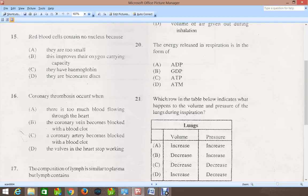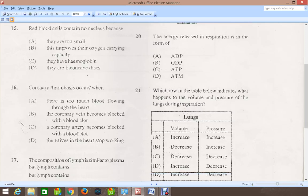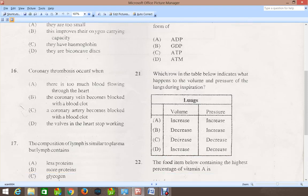Question 16: Coronary thrombosis occurs when, and the correct answer for that is C, which says a coronary artery becomes blocked with a blood clot. Once this takes place, the heart muscles will not be able to get any nutrients, for example, and of course oxygen.